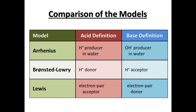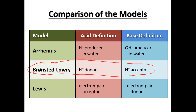Looking into our models from last time — Arrhenius, Bronsted-Lowry, and Lewis — our focus is going to be on the Bronsted-Lowry reaction, the BL. What we're going to look at is how acids can donate hydrogen, and bases can accept the hydrogen, and how we can pair them together in a reversible reaction.